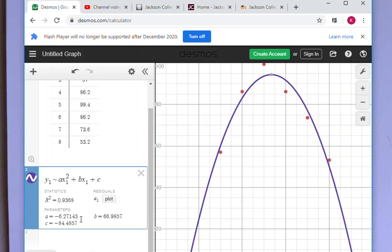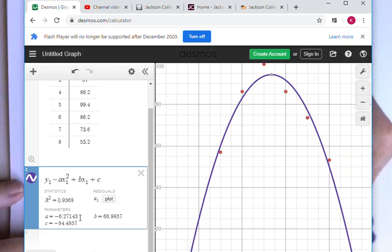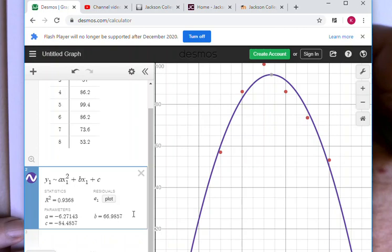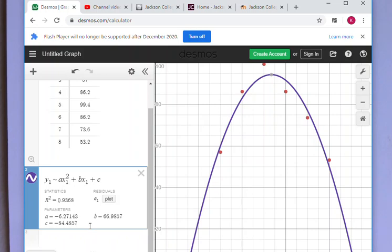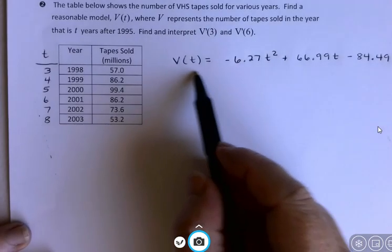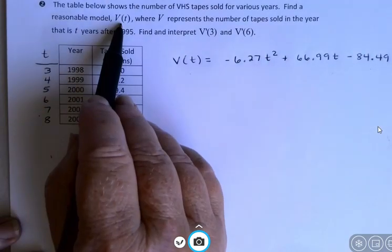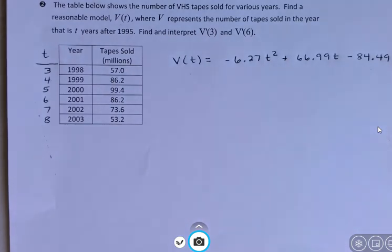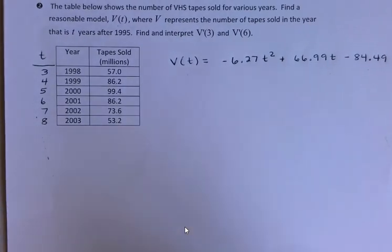They give me the A and the B and the C. So I'm just going to jot down my equation. V(t) would be negative 6.27t squared plus 66.99t minus 84.49. And I did use V since they wanted me to write this as V(t). That's how I did it with t as my independent variable. And there I've got my equation that fits the data reasonably well.